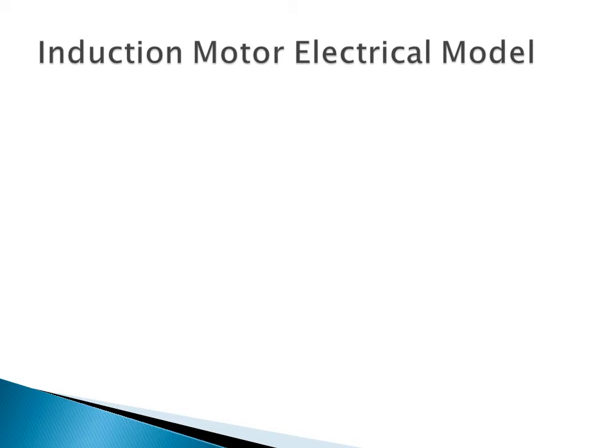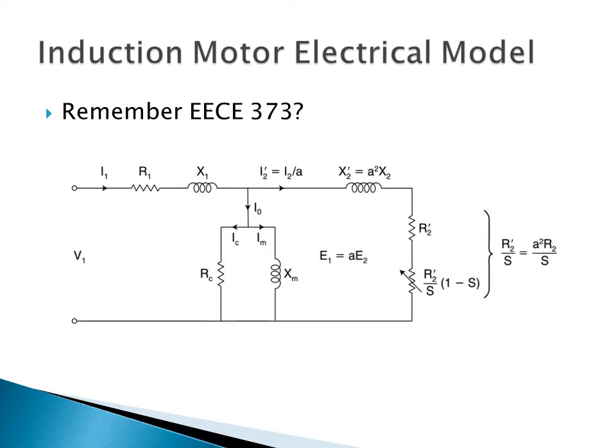So for those of you in UBC who have taken EC373, this should look familiar to you, and it's the electrical model for the induction motor. R1 and X1 represent the stator resistance and reactance. RC represents the core losses in the machine. XM represents the magnetizing inductance. And A squared X2, R2 prime, and R2 prime over S represent the rotor parameters. Where R2 prime over S is our parameter of interest because that represents the mechanical power delivered to the load.